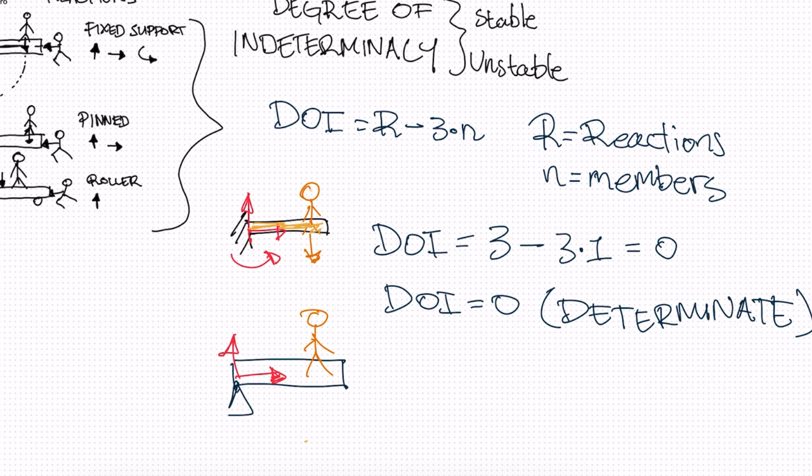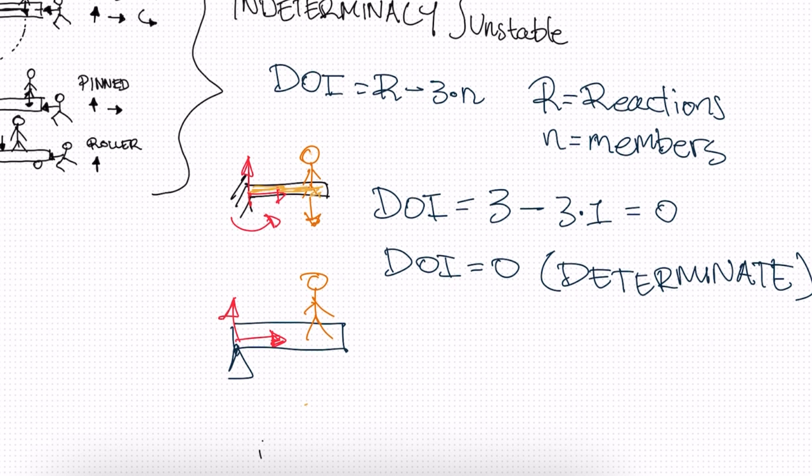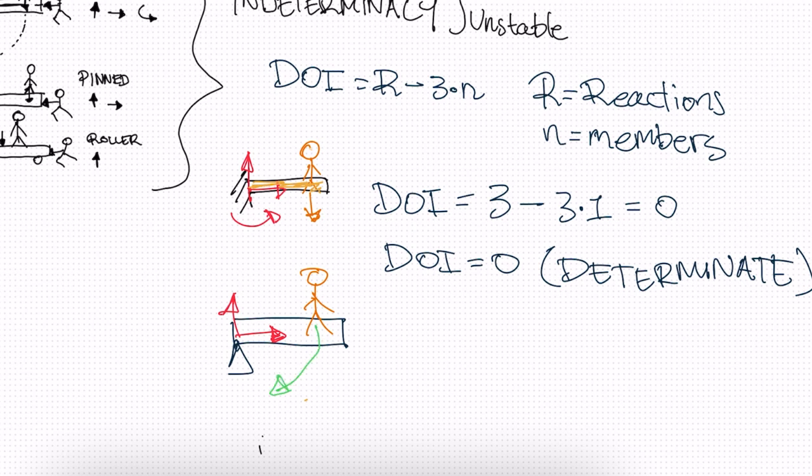So we can already tell that this beam is unstable just by looking at it, because this beam is going to turn in this direction. This person's standing here and this beam will turn until maybe hits the floor. There might be ground here, or maybe there's a wall here. It'll keep turning until it reaches a point where it physically can't keep turning.